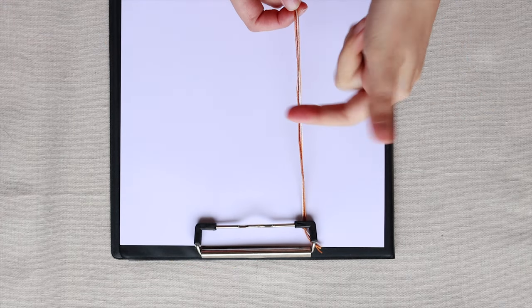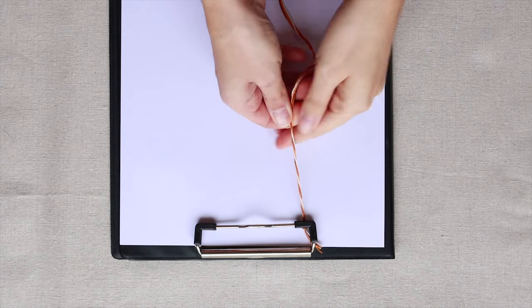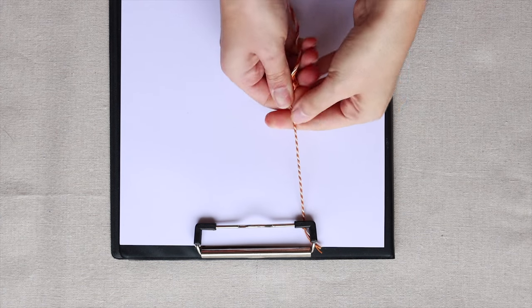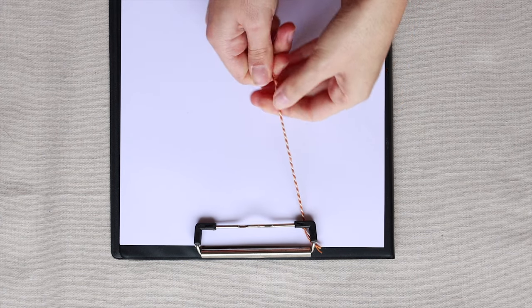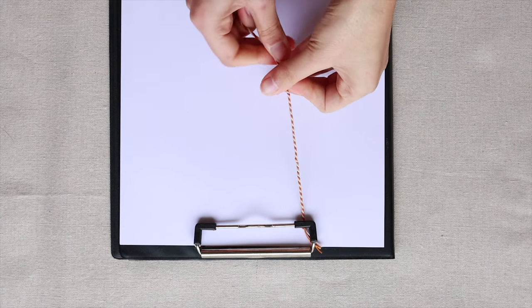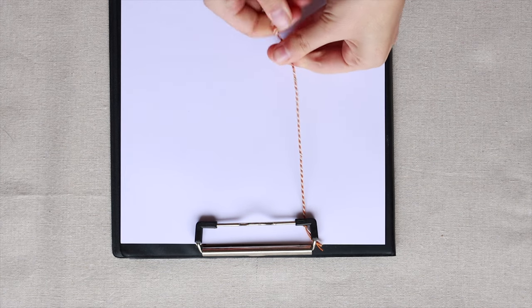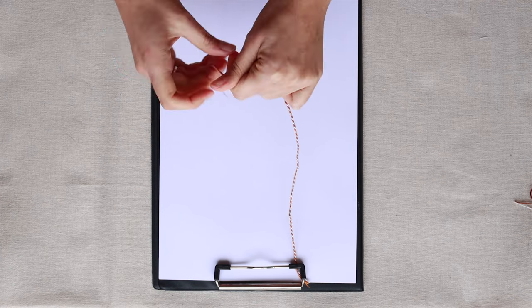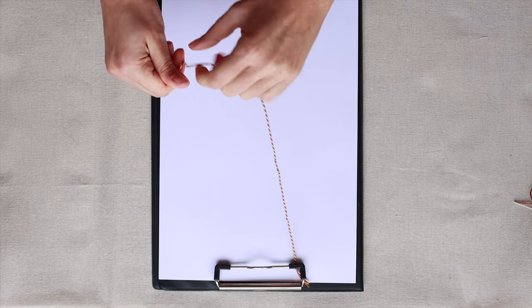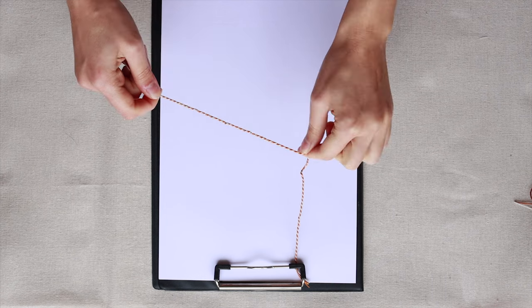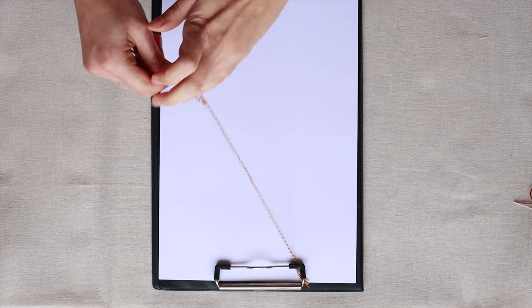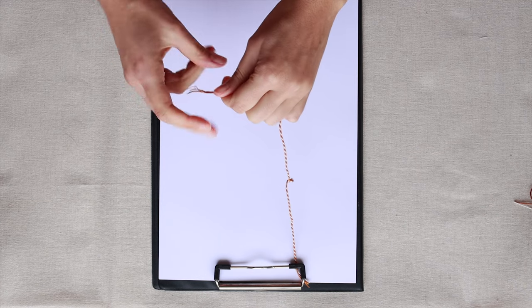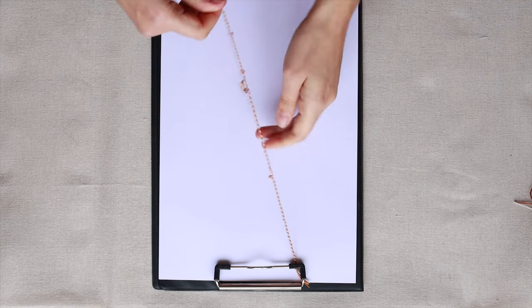Then, twist them tightly, always to the same side. If they start twisting together in the middle, that's a good thing, it means it's working. Just try to pull a bit on the cords as you go to prevent them from twisting too much.